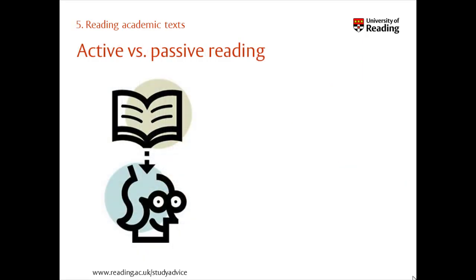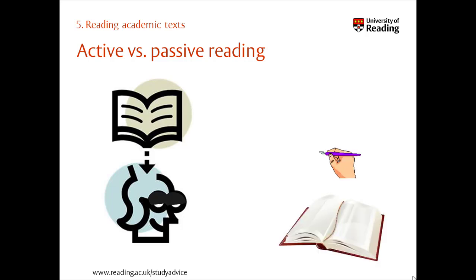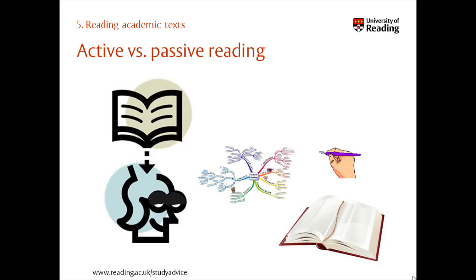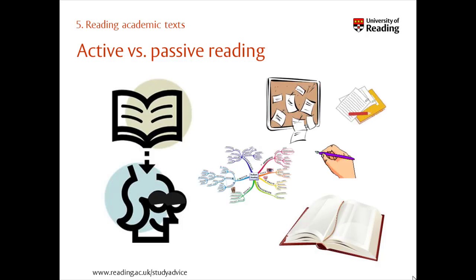To be efficient at reading academically you need to read actively. If you just read academic texts over and over hoping that the information will somehow pour into your brain, you're likely to fall asleep and not remember what you've read. This is because reading over and over is a passive way of reading. To read actively you need to do something with the information you read — to engage with it — such as creating mind maps, different forms of notes, or making connections between what you've read.